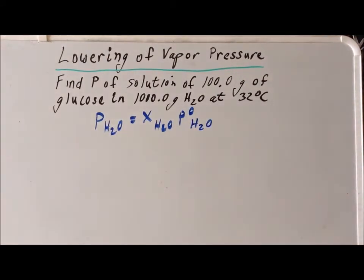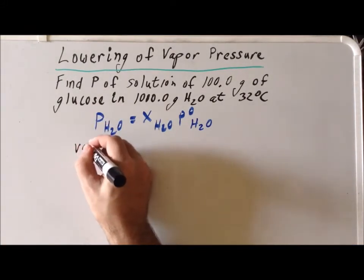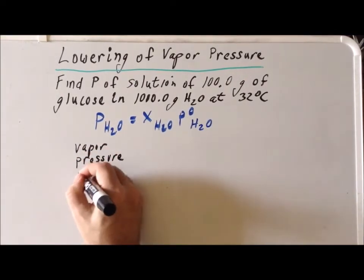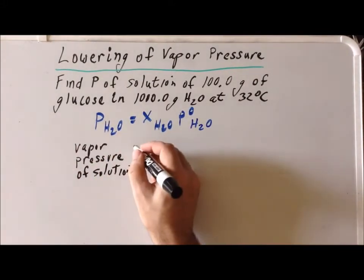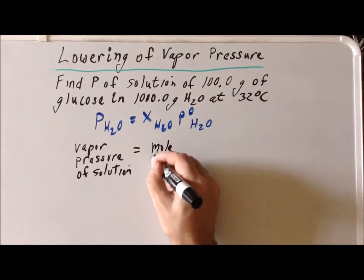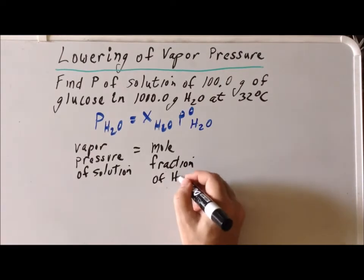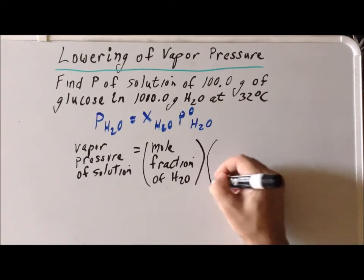Sometimes when we have a formula like this, it is helpful to write out in words what each of the symbols means. The X_H2O is the mole fraction of water in the solution, and P°_H2O is the vapor pressure of pure water.